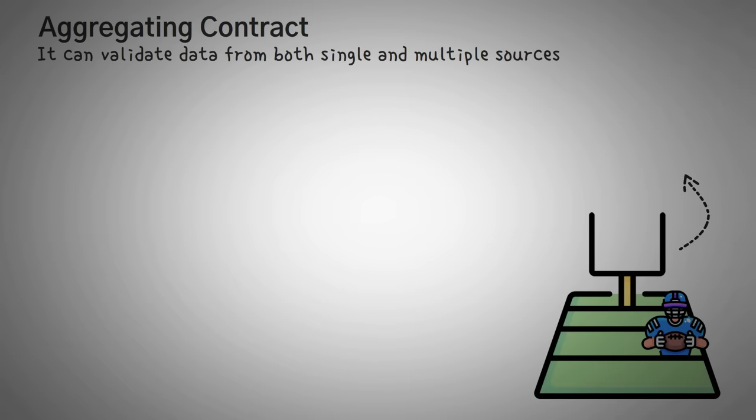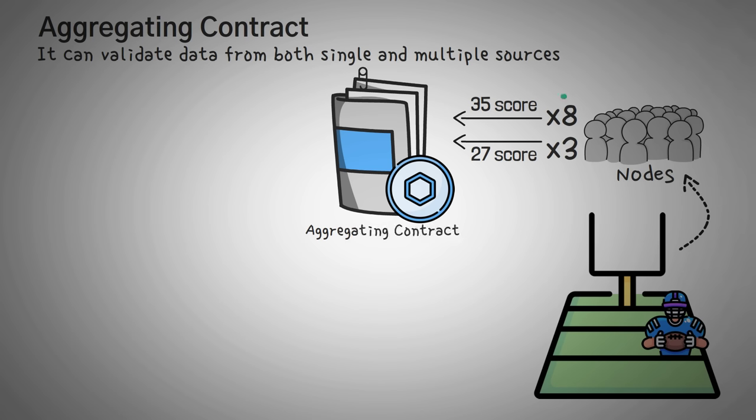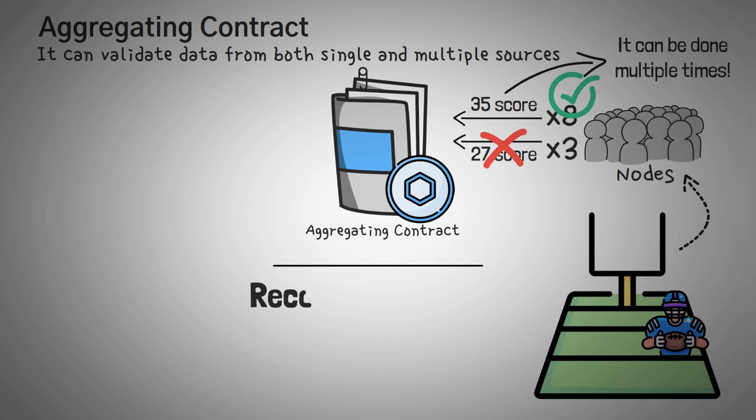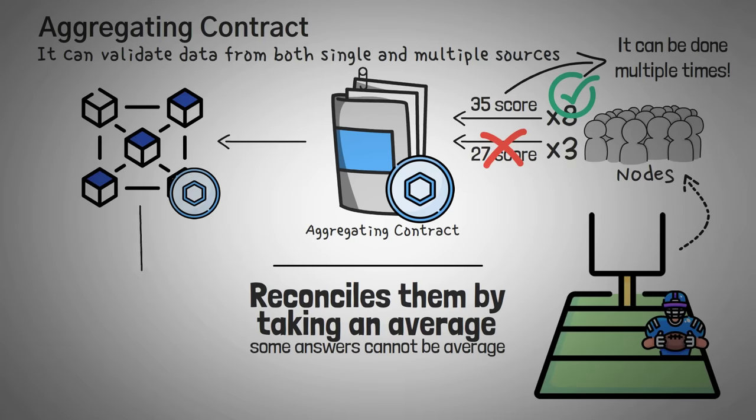Finally, Chainlink's aggregating contract can validate data from both single and multiple sources. Using the previous NFL match as an example, let's assume eight different nodes send one set of similar scores of the game, and then another three nodes transmit a different game score. Well, the aggregating contract will basically look at all these answers and then get rid of the ones that don't really make sense, or in this case the three that transmitted a different game score. The aggregating contract can repeat the validation process for many different sources, after which it reconciles them by taking an average. Now it is worth noting that some answers to questions cannot be an average, but that's outside the scope of this video. With all of these processes combined, Chainlink seamlessly and reliably provides accurate data for smart contract execution.